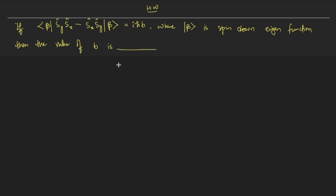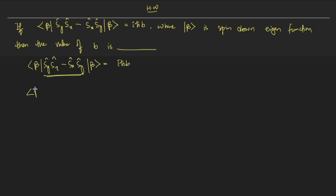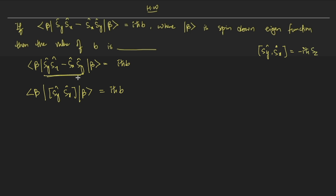I'll quickly explain how to solve this question without going step by step, since I've already explained it in the previous video. We have Sy·Sx minus Sx·Sy acting on beta equals i·ℏ·b. This part is nothing but the commutation of Sy and Sx. I already told you that the commutation [Sy, Sx] equals minus i·ℏ·Sz.